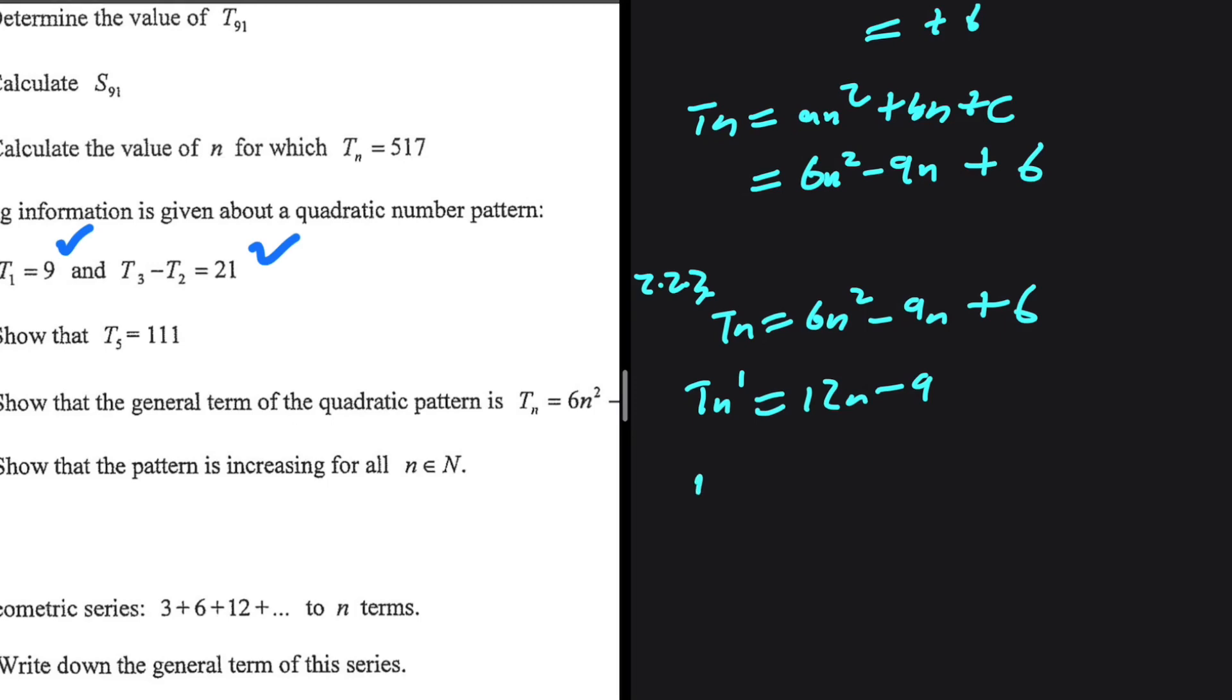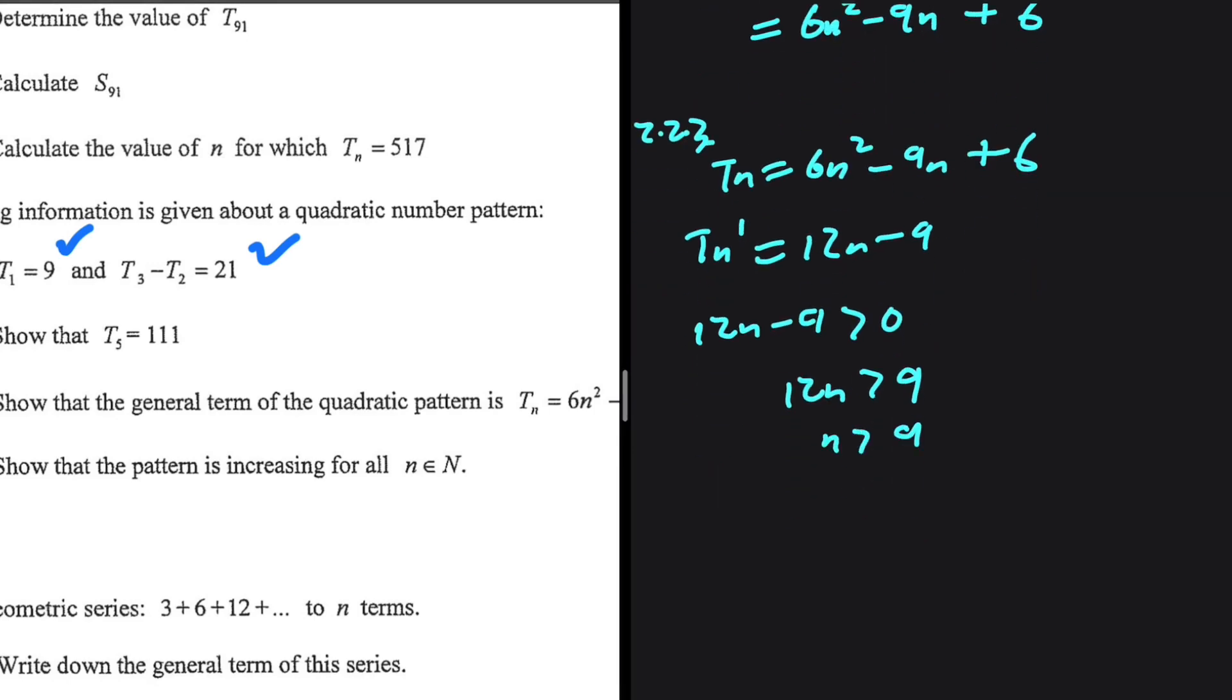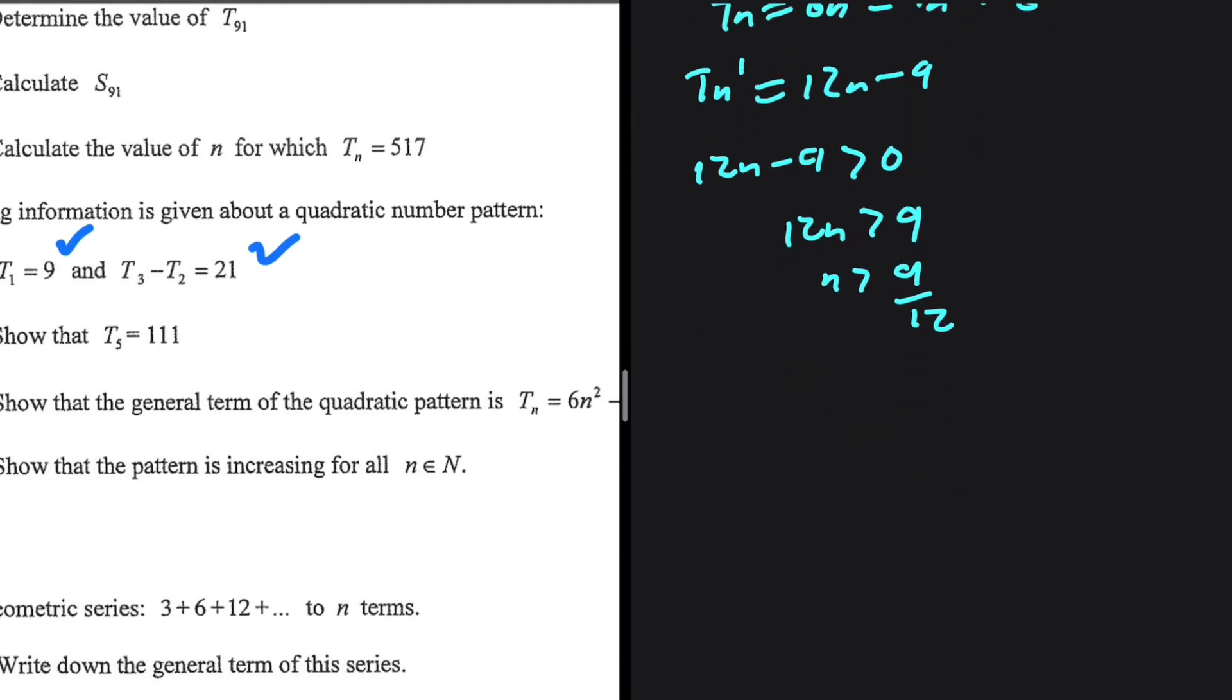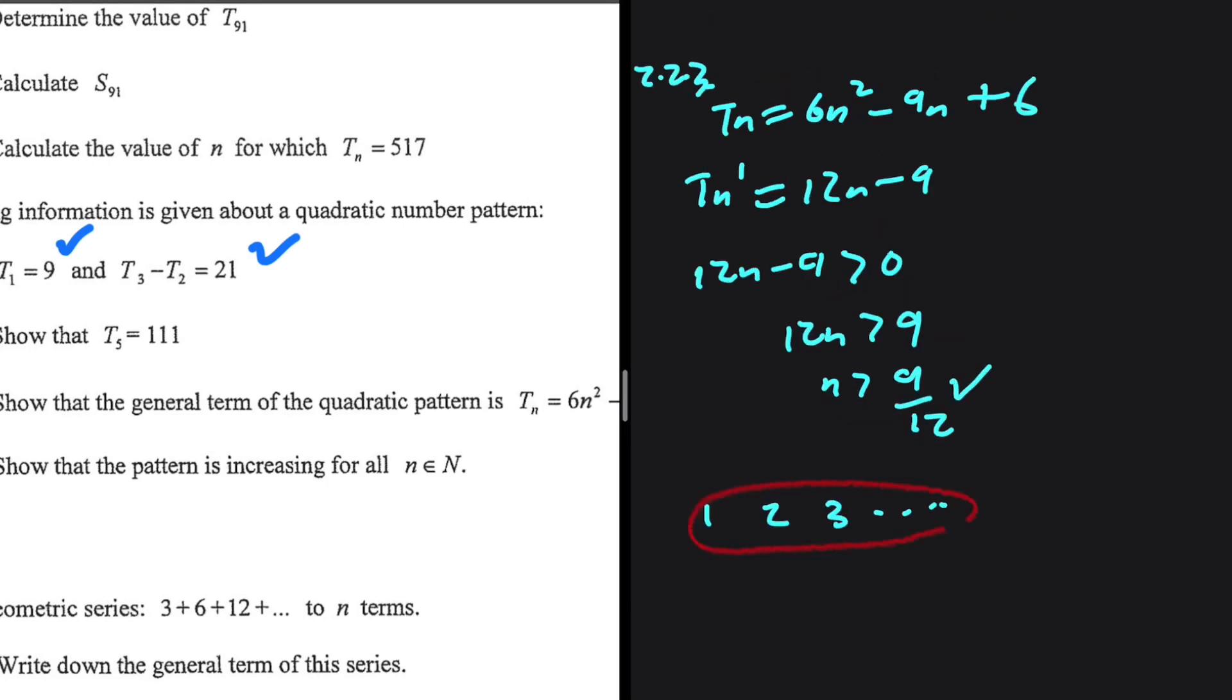So when is the gradient positive? That is the same as saying when is 12n minus 9 greater than 0? 12n minus 9 is greater than 0 when 12n is greater than 9. That is when n is greater than 9 divided by 12. Natural numbers is 1, 2, 3, so on and so on. As you can clearly see, all natural numbers are greater than 9 divided by 12. So when n is an element of natural numbers, our gradient is positive. The quadratic pattern is increasing. That is how I'm interpreting the question. I wonder how you solved it. Please just drop a comment and let me know.